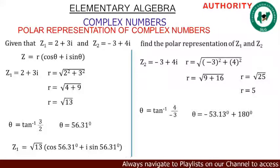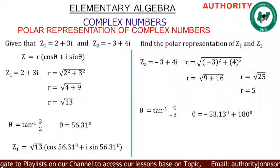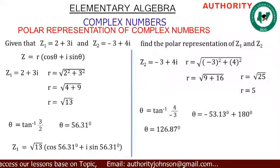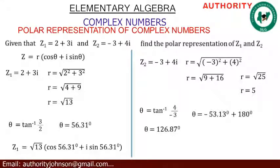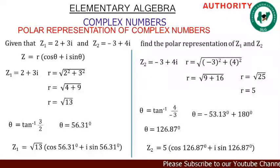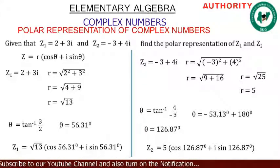tan⁻¹(4/−3) gives −53.13°. Since we cannot have a negative angle in this context, we add 180°: −53.13° + 180° = 126.87°. So θ = 126.87°. Therefore the polar representation is z₂ = 5(cos 126.87° + i·sin 126.87°).